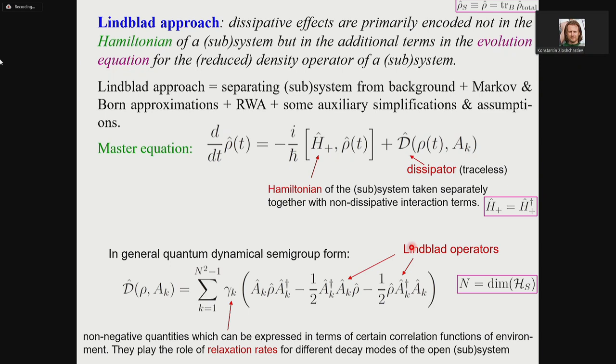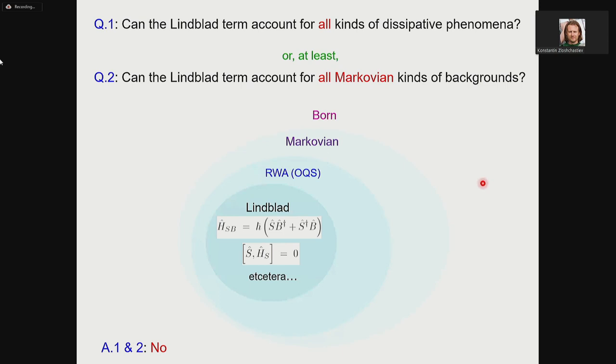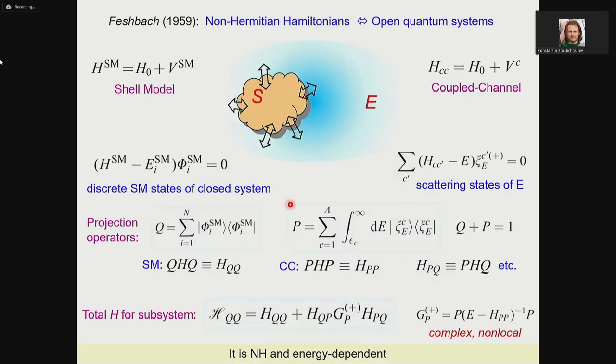When you have a background environment, it will contribute partially into your Hamiltonian, but most of the contribution will come through the dissipator term which is traceless. Can the Lindblad term account for all particular phenomena? Can this term account for all Markovian kinds of backgrounds? Unfortunately, the answer to both questions is no. You can see from this picture that the Lindblad approach is basically a subset of secular approaches and subset of Markovian and Born approximation. It's only upon assuming all this chain of approximations you eventually can say your system can be described by a Lindblad master equation.